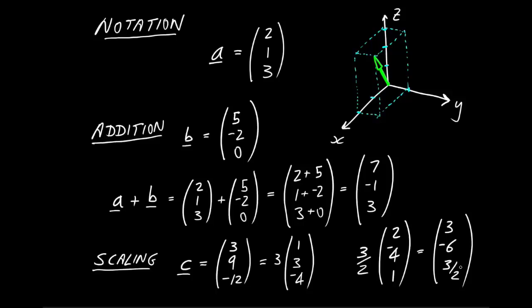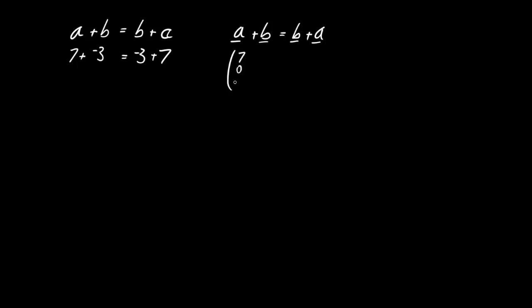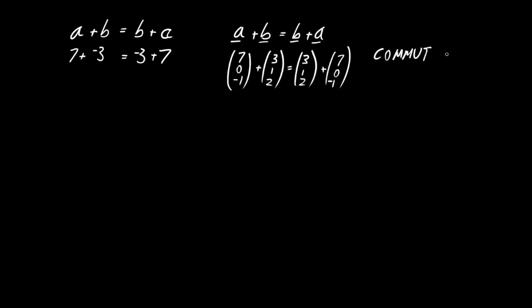With these definitions of addition and scaling, can we say anything about the properties? For regular numbers, a + b equals b + a — for example, 7 + (-3) = (-3) + 7. The same is true for vectors: vector a + vector b equals vector b + vector a. For instance, (7, 0, -1) + (3, 1, 2) = (3, 1, 2) + (7, 0, -1), because vector addition is defined as adding each element to the corresponding element. This property is called being commutative — vector addition is commutative.